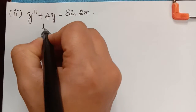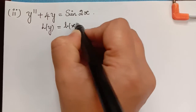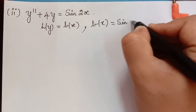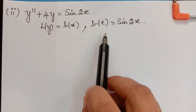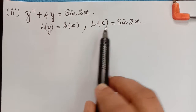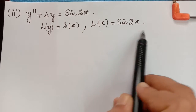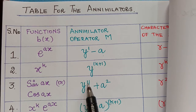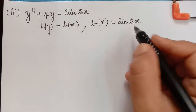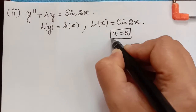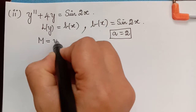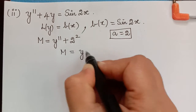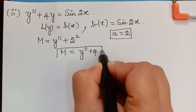The given question is of the form L(y) = B(x), so it is a non-homogeneous equation, where B(x) = sin 2x. We have to choose an annihilator operator M for this B(x). Since B(x) = sin 2x, it is of the form sin(ax), and the annihilator operator for sin(ax) is D² + a². Here a = 2, so the annihilator operator M = D² + 2² = D² + 4.